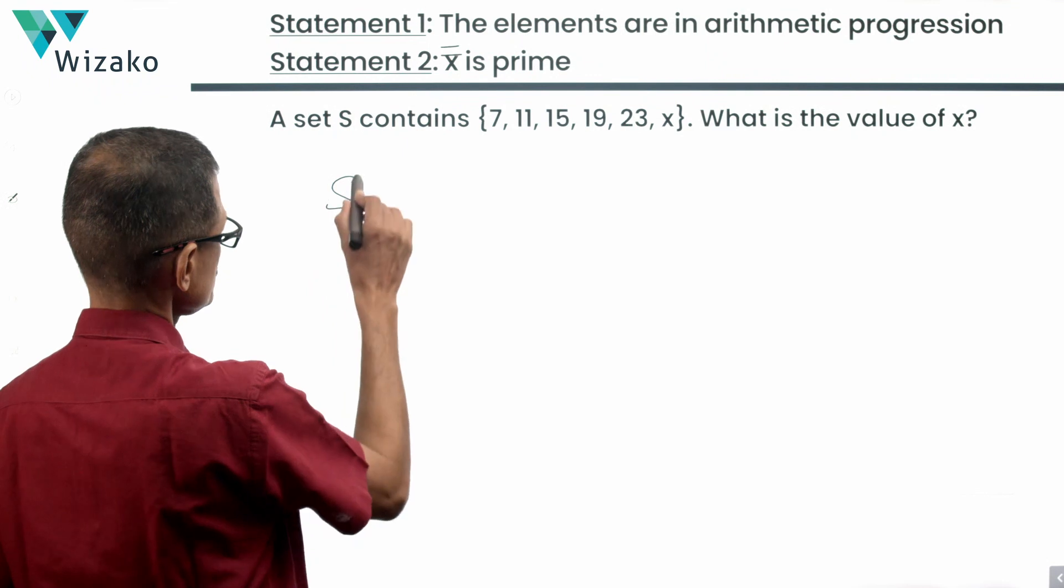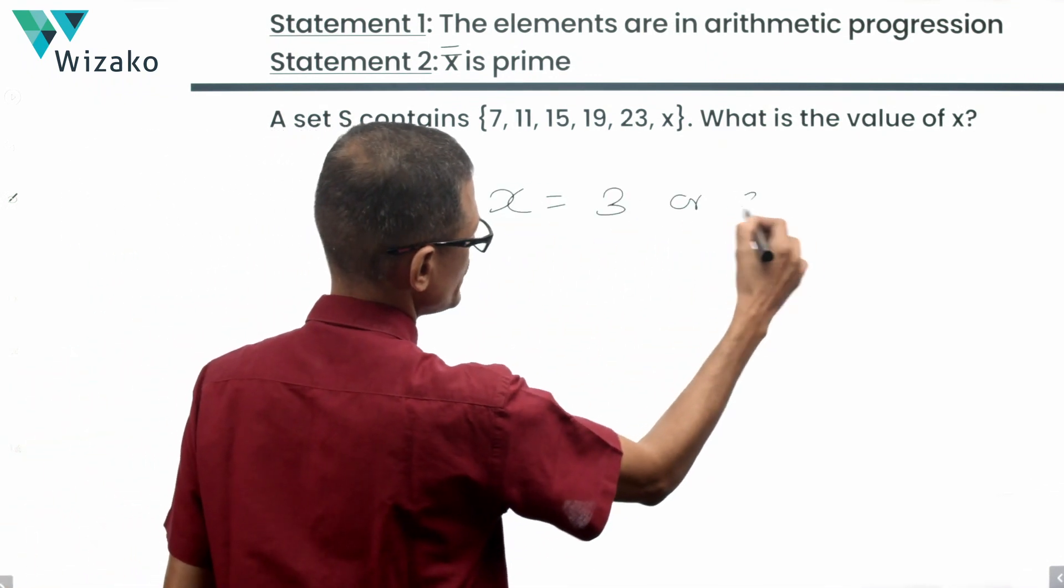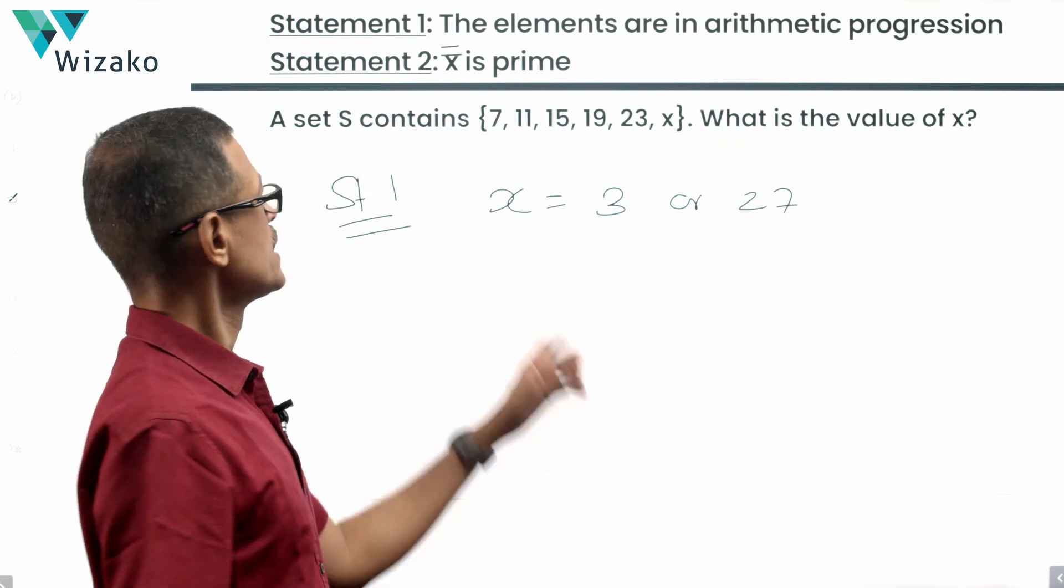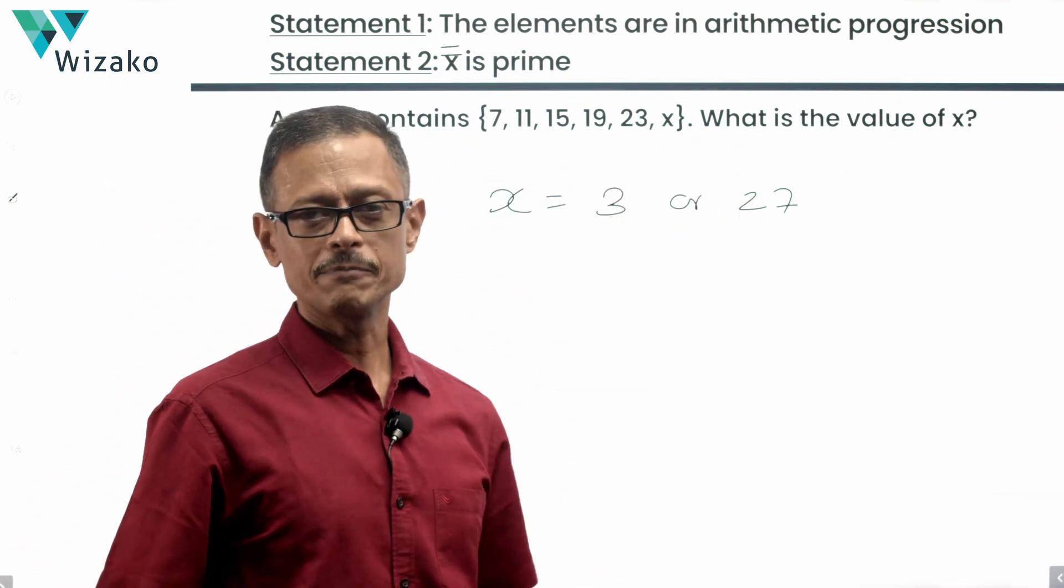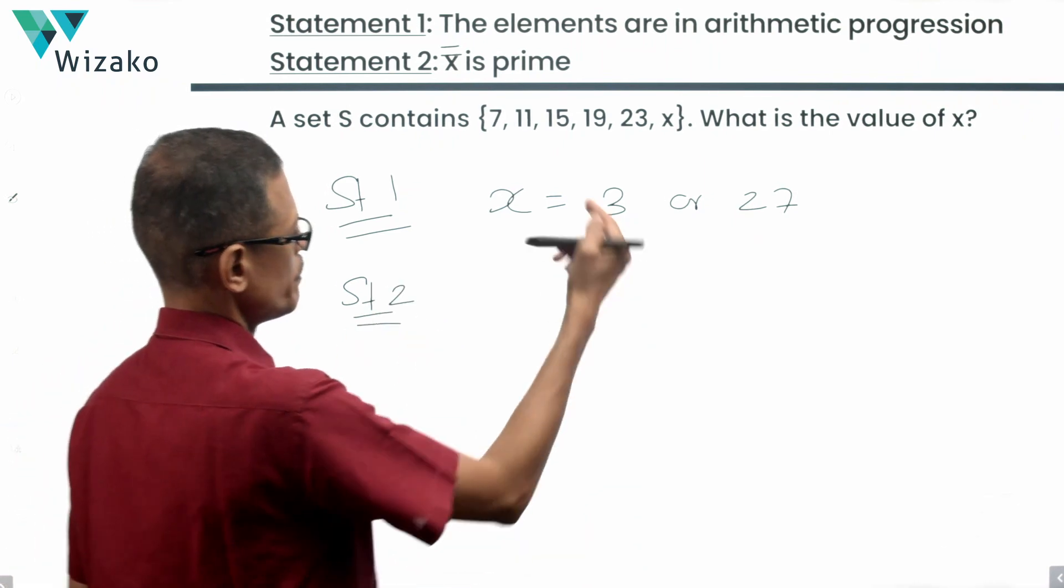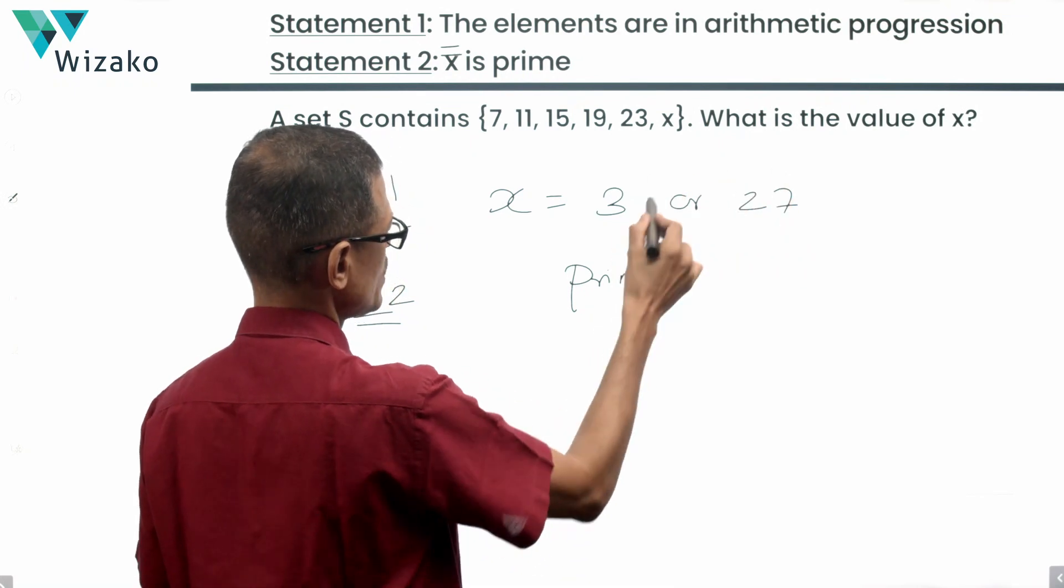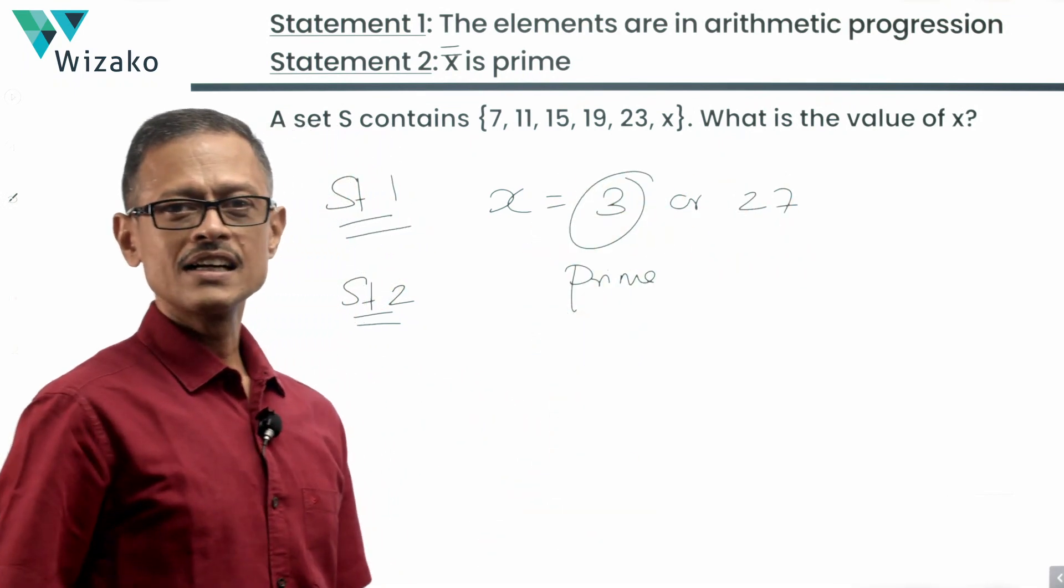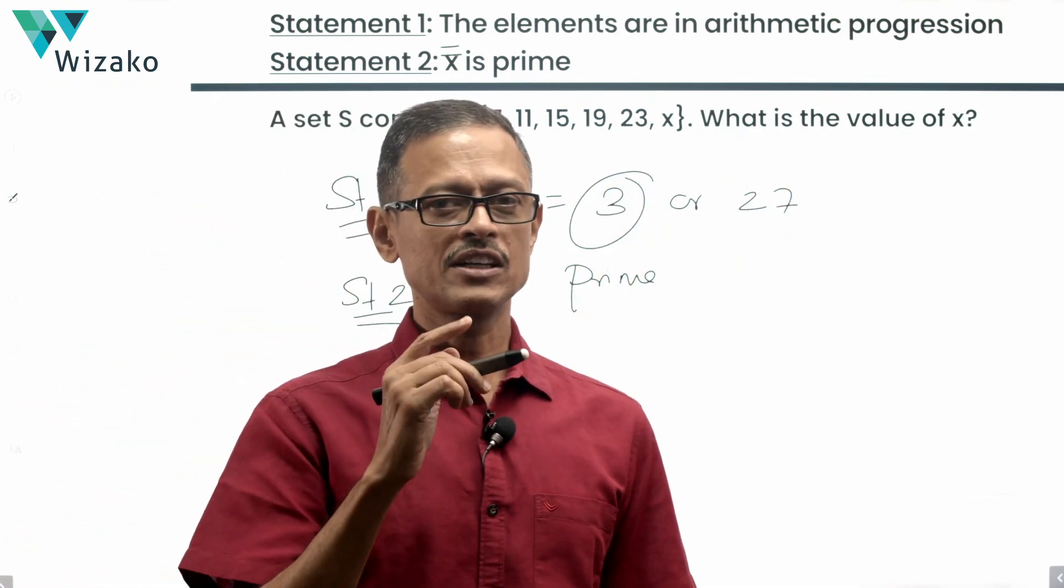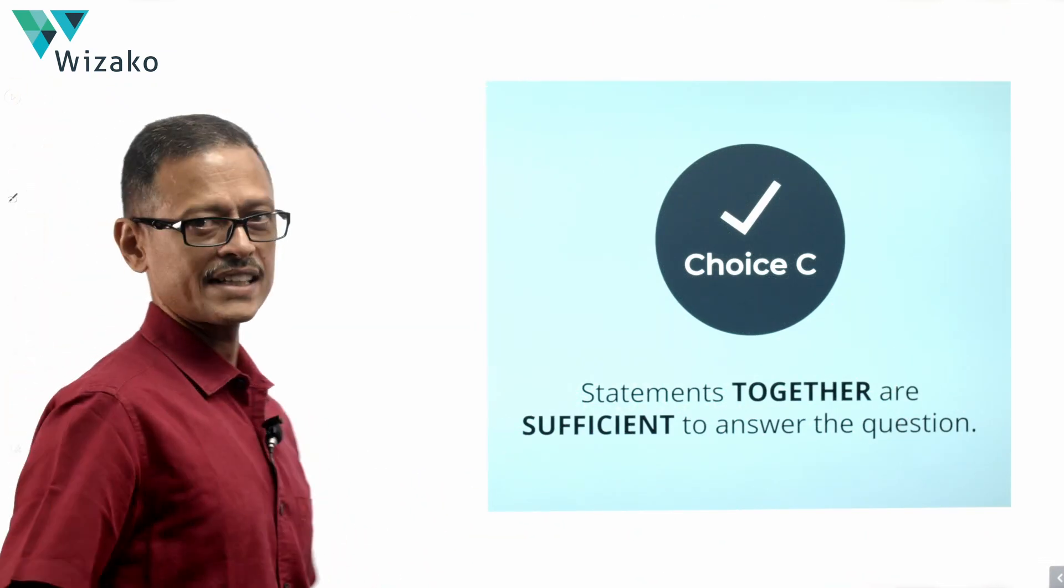From statement one, we have narrowed down x to be equal to 3 or 27. Only two possible values if these numbers should be in an AP. Statement two tells us that it's a prime number. So between 3 and 27, which is a prime number? We know that if it's a prime number and it should be one of these two numbers, then it obviously is 3. Combining the two statements, we've been able to arrive at a unique value for x. So statements together are sufficient. Choice C is the correct answer to the question.